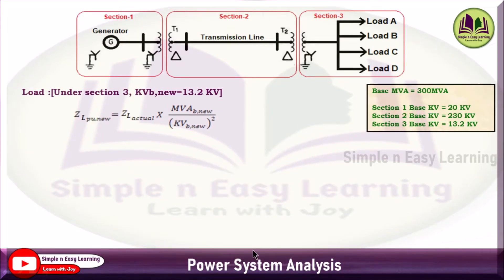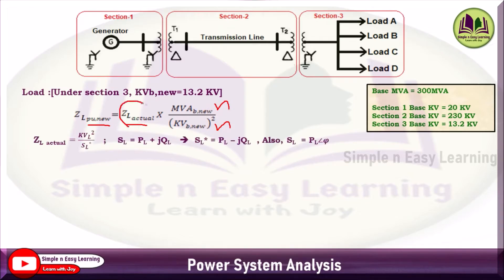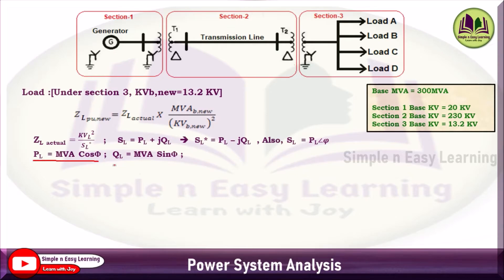Now calculate the per unit impedance of the four loads. Apply: Z_L_pu = Z_L_actual × MVA_base / (kV_base)², where Z_L_actual = kV_L² / S_L_conjugate. Here S_L = P_L + jQ_L, so S_L_conjugate = P_L − jQ_L. Alternatively, S_L = MVA ∠φ, where P_L = MVA·cosφ and Q_L = MVA·sinφ.